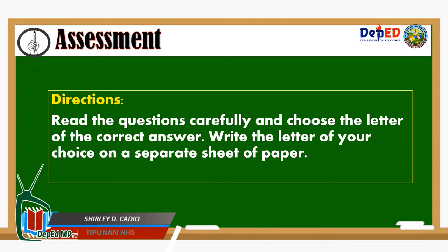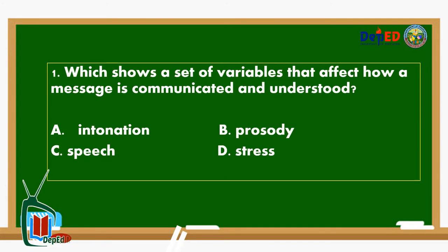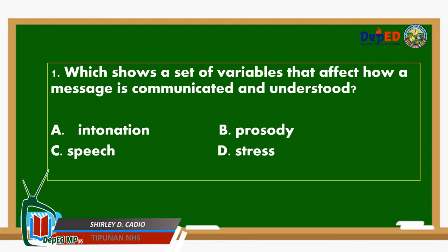Let's now see what you have understood in today's lesson. Read the questions carefully and choose the letter of the correct answer. Write the letter of your choice on a separate sheet of paper. Number 1: Which shows the set of variables that affect how a message is communicated and understood? A. Intonation. B. Prosody. C. Speech. D. Stress.